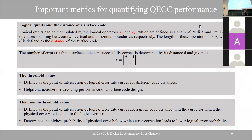Two important metrics for quantifying how well a quantum error correction code functions are the threshold and pseudo-threshold. For codes from the same family, say surface codes, their logical error rate versus physical error rate curves all meet at a single point called the threshold. Codes of larger distance perform better below the threshold but worse above it, which is why finding the threshold is useful.